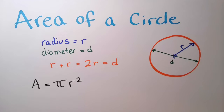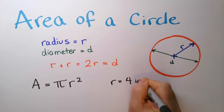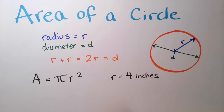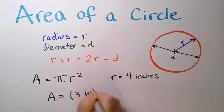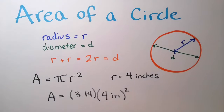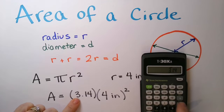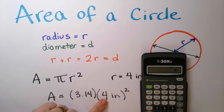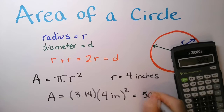Let's practice this so you get really comfortable. If the radius of my circle is 4 inches, that means that my area is going to be pi — I'm going to use 3.14 — times 4 inches squared. So I'm going to put in 3.14 times 4 times 4, because 4 squared is just 4 times itself, and I get 50.24 inches squared.